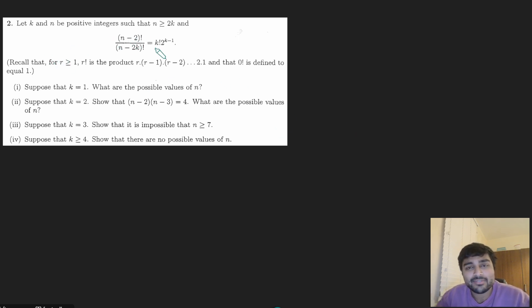We have k and n positive integers such that n is at least 2k, and we have (n - 2)! over (n - 2k)! equals k! times 2 to the k minus 1. And here it just gives the definition of a factorial.